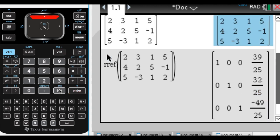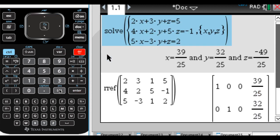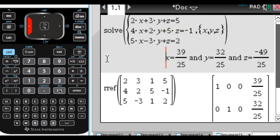And you can see, let me delete this, we can get them all on one page. You can see here when I use solve, I got that x was 39 over 25. Here, I got in the first row, I have a 1 for x, so x is, and then I have 39 over 25. I got 32 over 25 for y here.